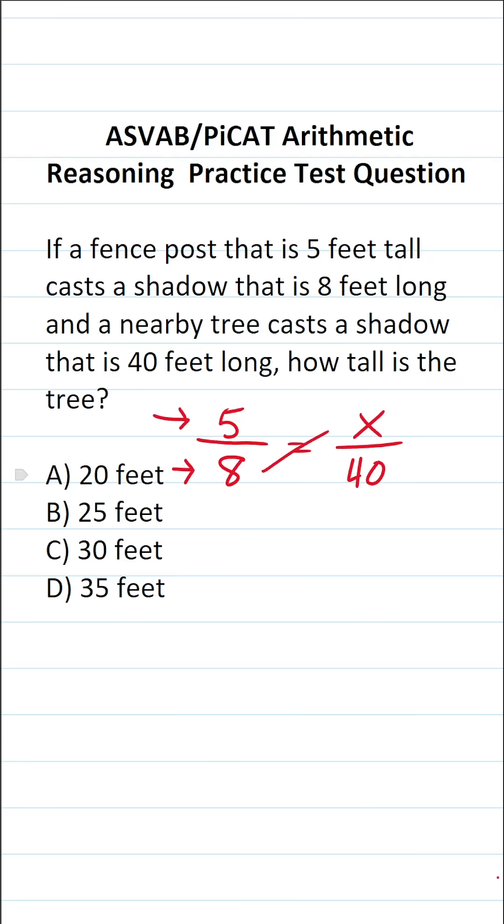You solve proportions via cross-multiplication, so this becomes 8x equals 5 times 40. If you can't do 5 times 40 mentally, do it off to the side.